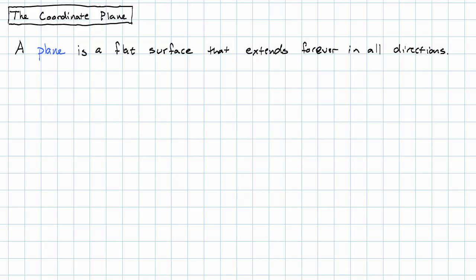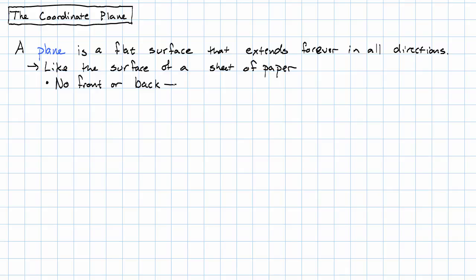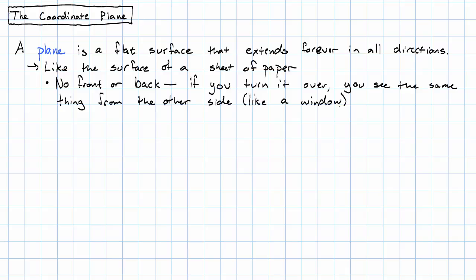You might think about a plane being like the surface of a sheet of paper. However, it's important to keep in mind that a plane doesn't have a front and a back. Instead, if you turn it over, you see the same thing from the other side. So in that sense, it's more like a window than a sheet of paper. Think if you drew on the inside of a window and then went around and looked at it from the outside.